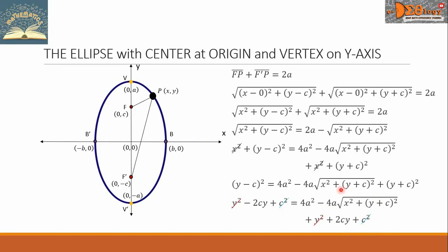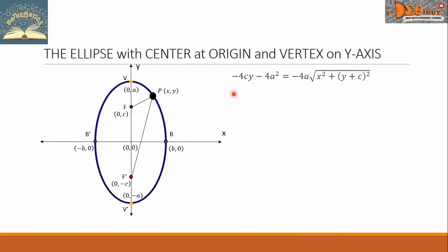Let us isolate the big radical alone on the right side. The positive 2cy we will transpose to the left side — from positive it becomes negative. But there is also -2cy on the left, so combining those two terms gives -4cy. There is also 4a² which we transpose to the left, so from positive it becomes negative. This is now our equation.